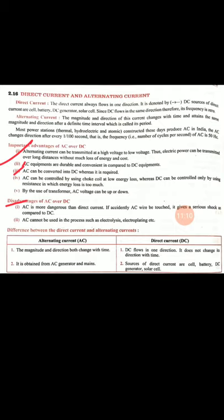To summarize the difference between AC and DC: in alternative current, both magnitude and direction change with time, while in direct current, the flow is in one direction only and does not change with time. AC is obtained from an AC generator or power plant, while sources of DC are cell, battery, DC generator, and solar cell.